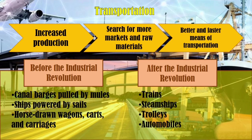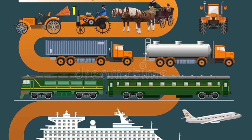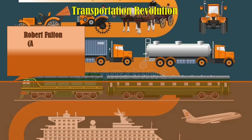But after the Industrial Revolution, this mode of transportation was replaced by trains, steamships, and automobiles. Now let's go back to the Transportation Revolution. It was during the 1800s when Robert Fulton, an American, invented the steamboat — enabling speedier water transportation.